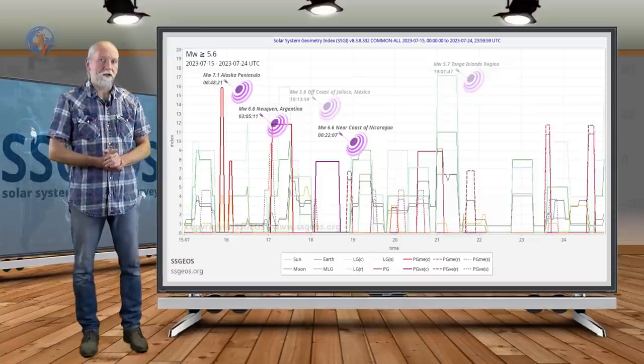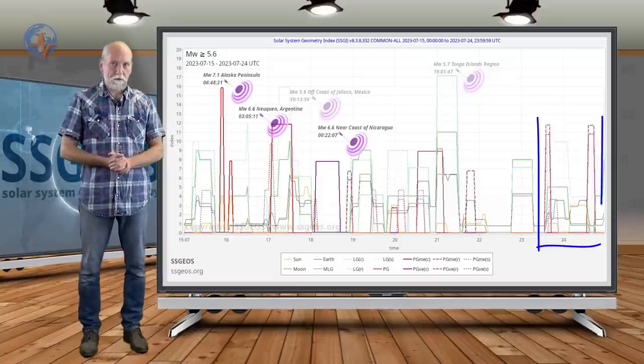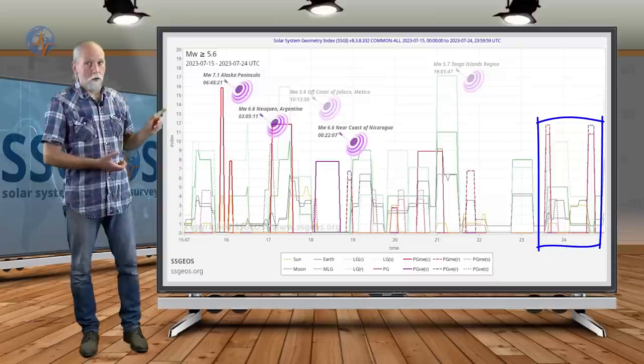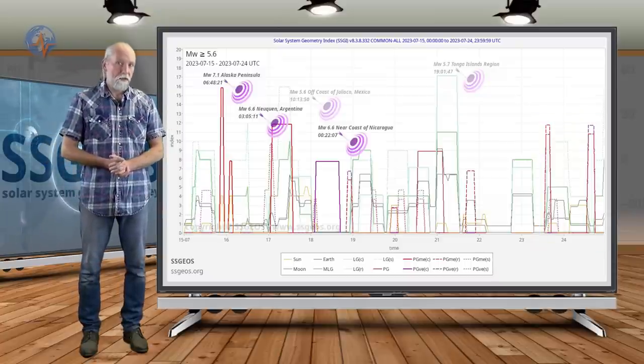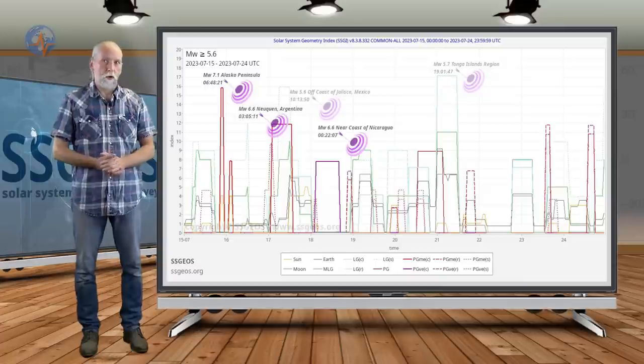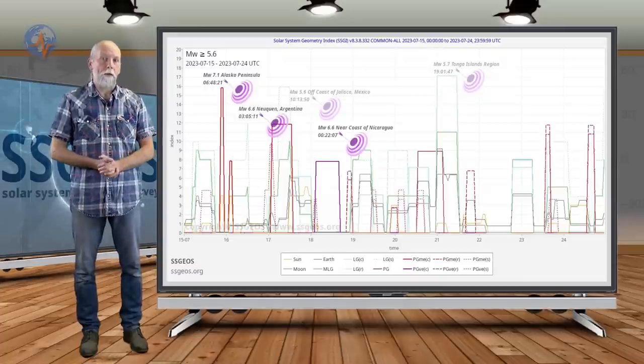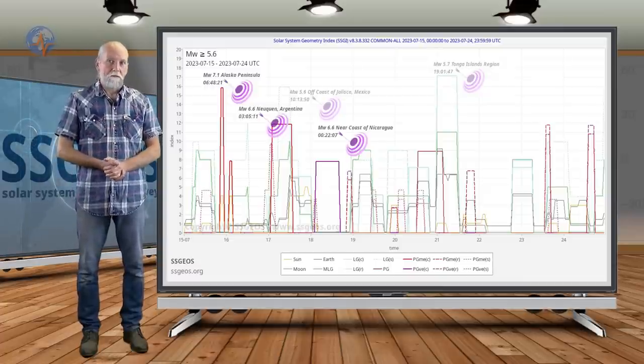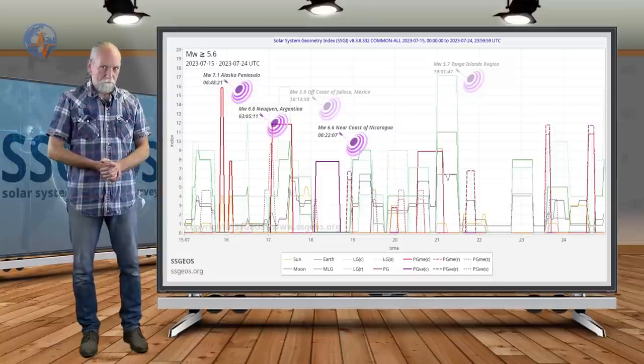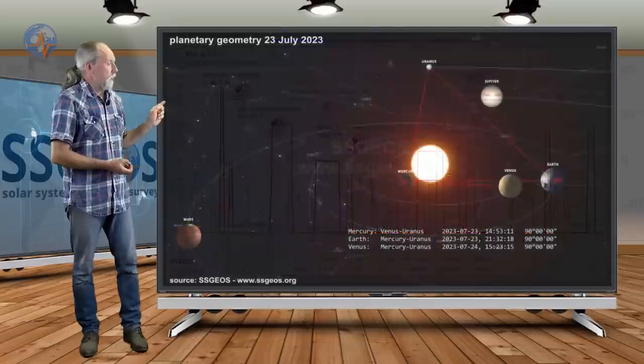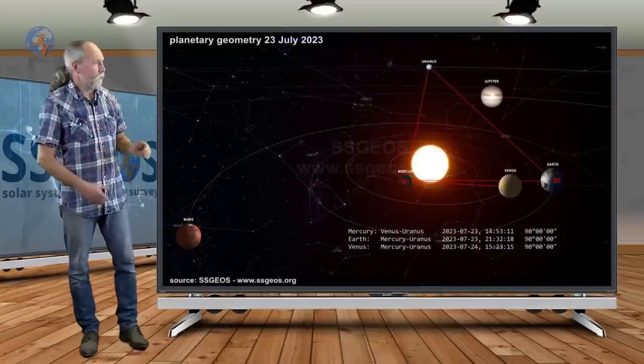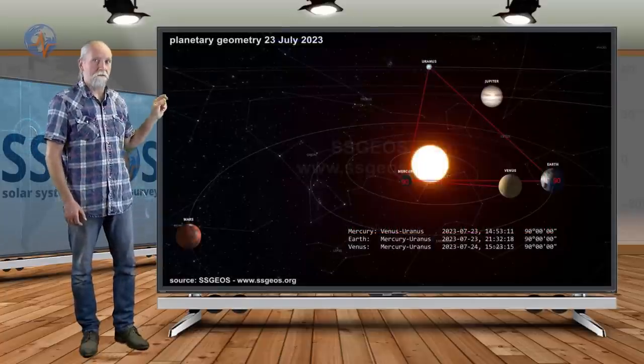I also briefly discussed the planetary peaks on the 23rd and 24th, today and tomorrow. I said that the last three times this geometry occurred, they almost always occur in pairs and we had mid-7 magnitude earthquakes. If we look at the solar system, this is very interesting, very important.